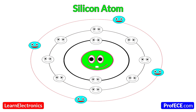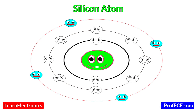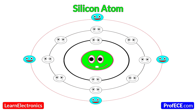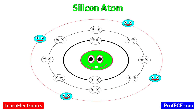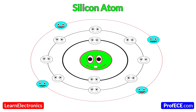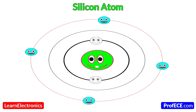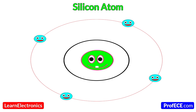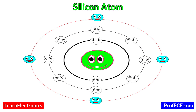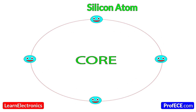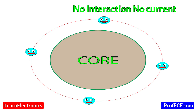For conduction, the outermost orbit will have to donate or accept some of the electrons. The participation of the nucleus and first two orbits in conduction is none. So for study purposes, the nucleus and first two orbits are isolated because they do not involve in conductivity. The new simplified setup is a core and an orbit with four electrons.